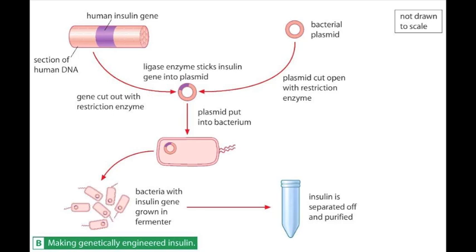They had learned how to transfer the genes from these cells into bacterial cells. The bacterial cells had been genetically engineered to contain human insulin genes. The genes continued to control the production of insulin even though they had been moved from a pancreatic cell to a bacterial cell.